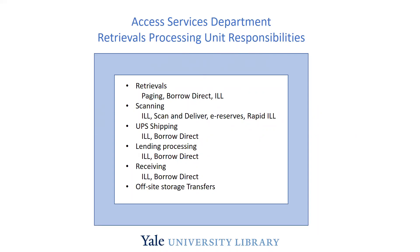We had a reorg here about five years ago and one of the results was to create a unit essentially responsible for all of the requests we receive for general collections materials here in Sterling and Bass — any kind of request, no matter where it originates or what form of delivery is wanted. So they do a ton of retrievals from our various collection locations. We have a very active paging service — about 75,000 pages a year. Our Borrow Direct service, a consortial resource sharing service, and also interlibrary loan. They're doing retrievals and after getting the materials, doing whatever has to happen to fill the request.